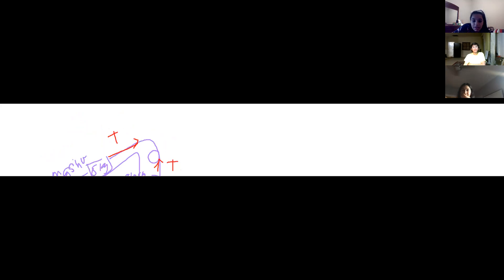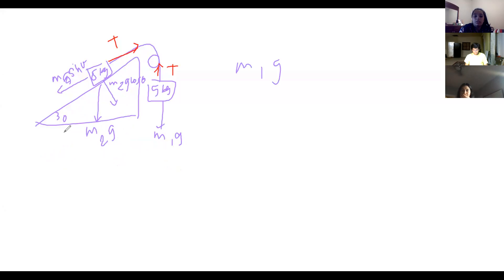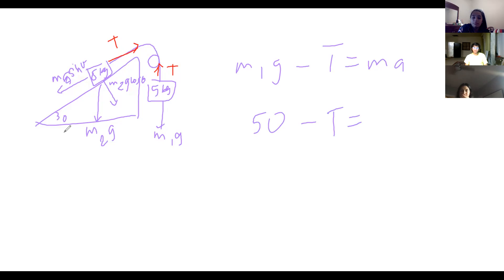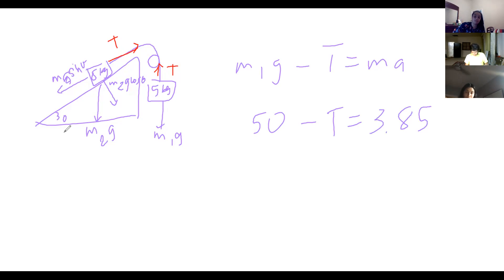The tension will be equal in either block. Using m1·g minus T equals m·a: 50 minus T equals 5 times 0.77. Five times 0.77 is 3.85, so tension is 50 minus 3.85, which gives approximately 46.2 newtons.